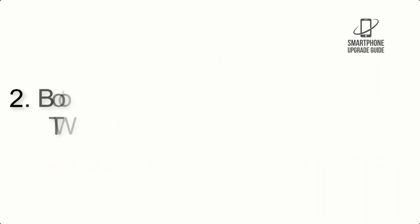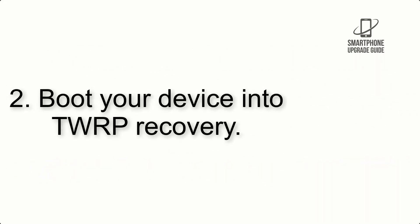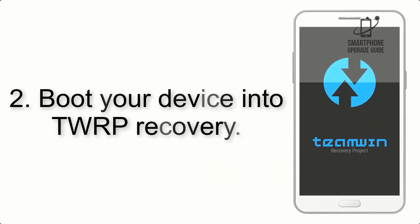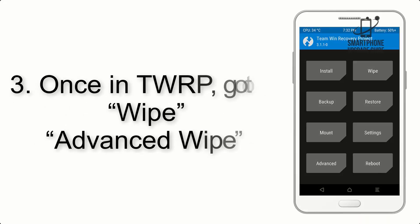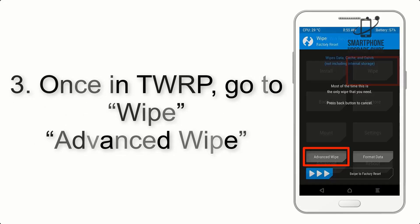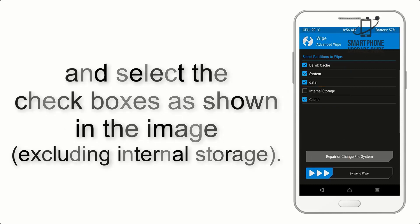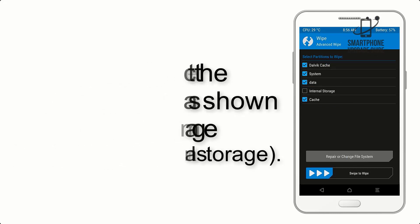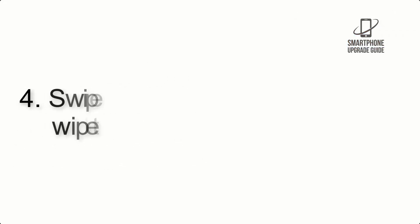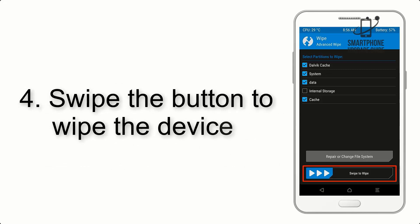Step 2: Boot your device into TWRP recovery. Once in TWRP, tap on Advanced Wipe and select the checkboxes as shown in the image, excluding internal storage.